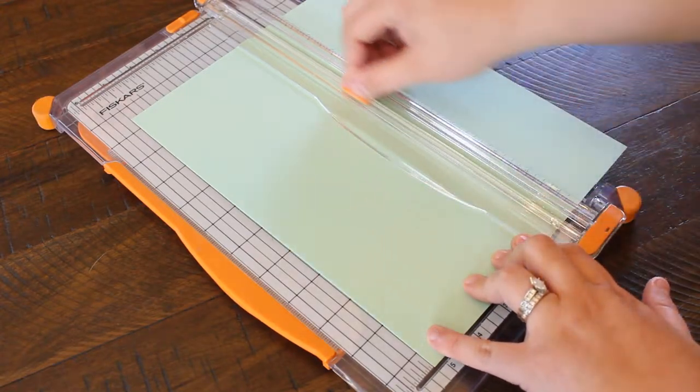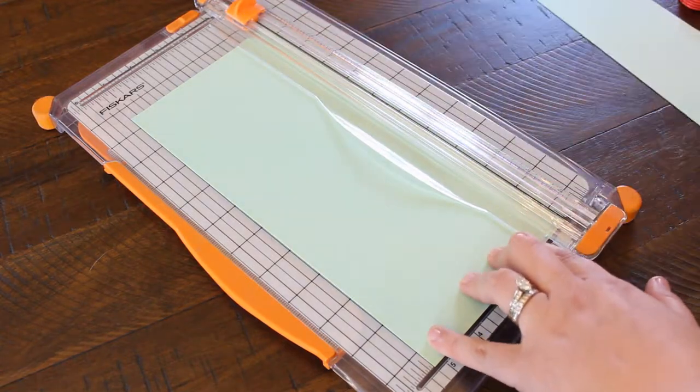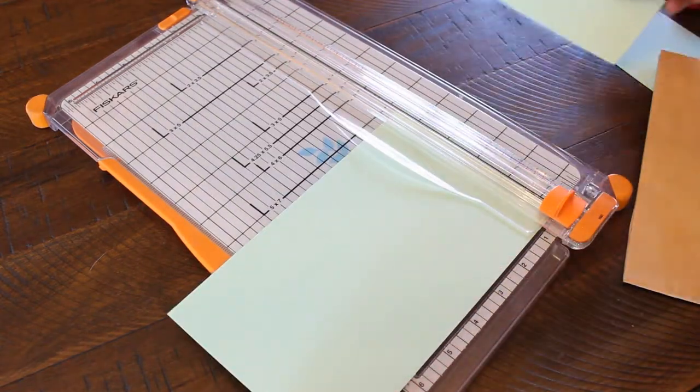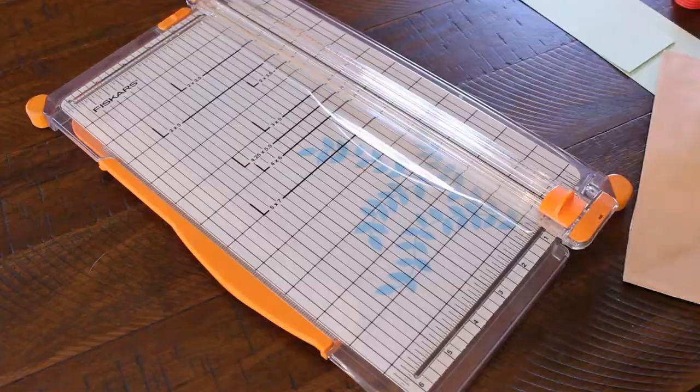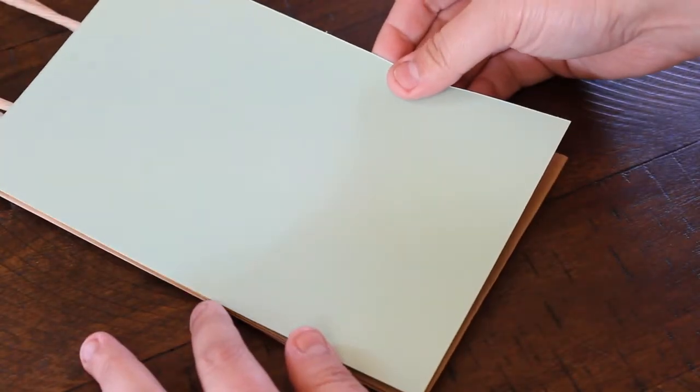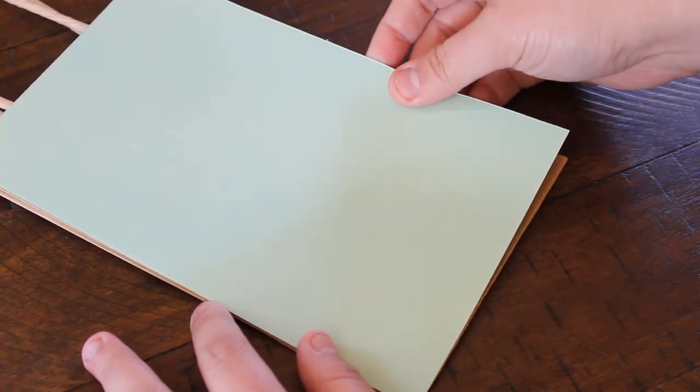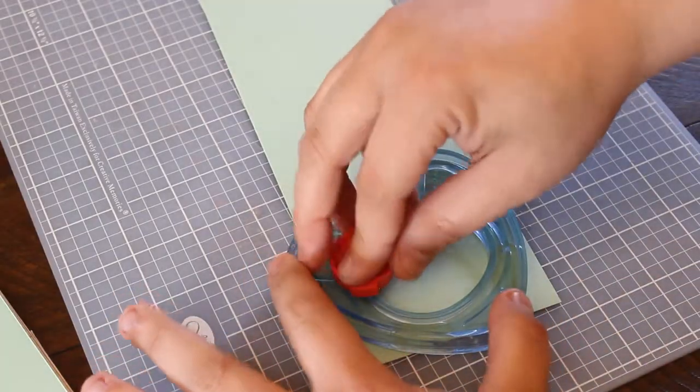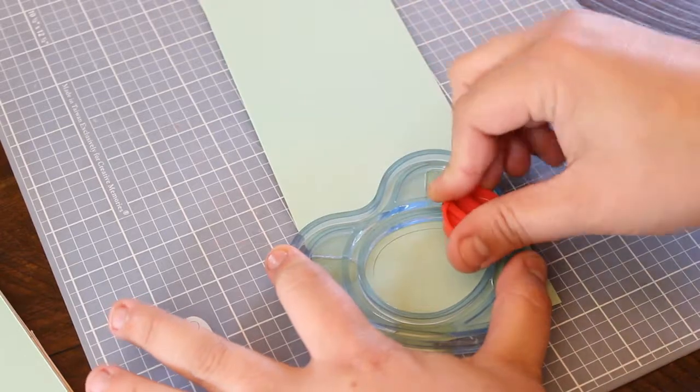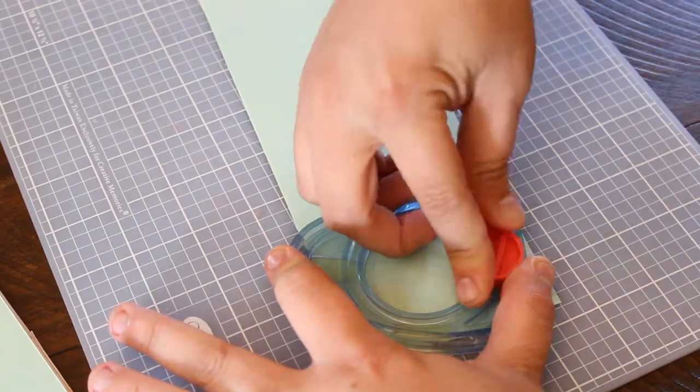Next up is zombie Pusheen. She is a little more of a blue green, kind of a minty green, so I got a paper as close as I could to that, cut that down to size. We're going to cover the whole front of the treat bag with this one, so just put some double sided tape on the back of it and then put it on there.